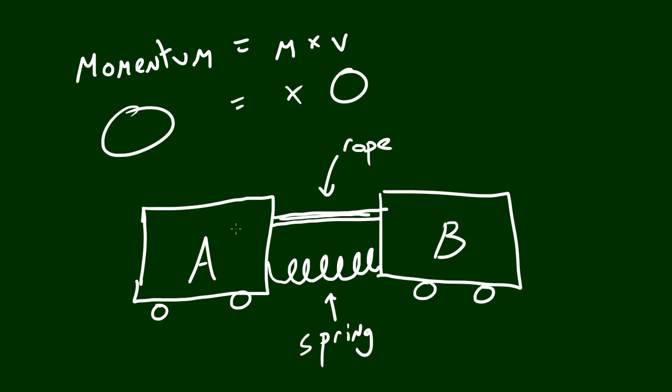So what we're going to do is take a pair of scissors, let me get it out right here, and we are going to cut the rope. Now as soon as we cut the rope, cart B is going to go flying in this direction and cart A is going to move in this direction. Why?